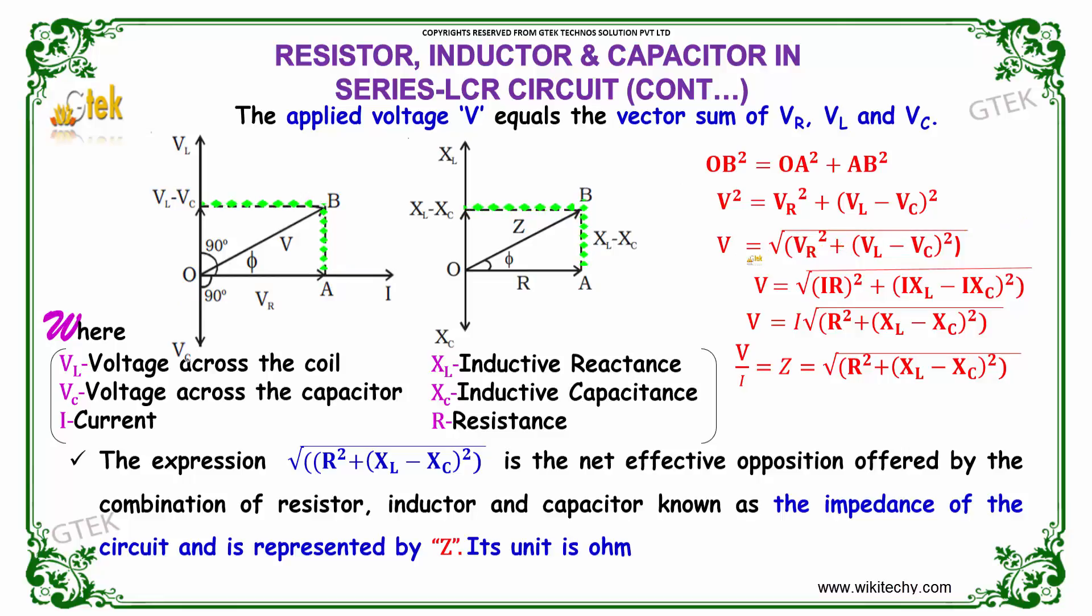This is the derivative equation. V is equal to root of the equation. Replacing VR with IR, VL with IXL and VC with IXC, and taking I out, we get V equals I into root of R squared plus XL minus XC whole squared. Therefore V by I equals Z equals root of R squared plus XL minus XC whole squared.